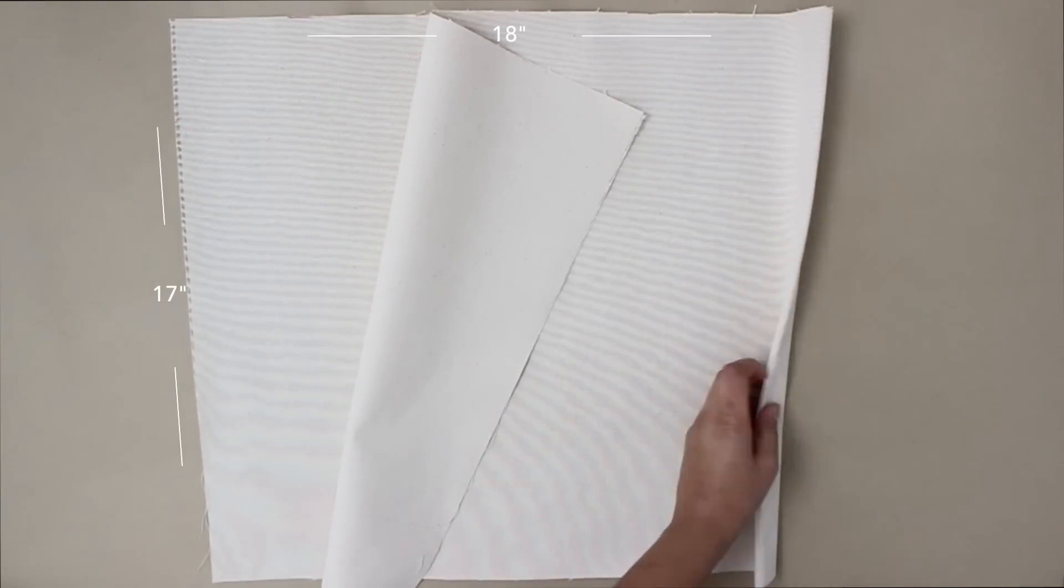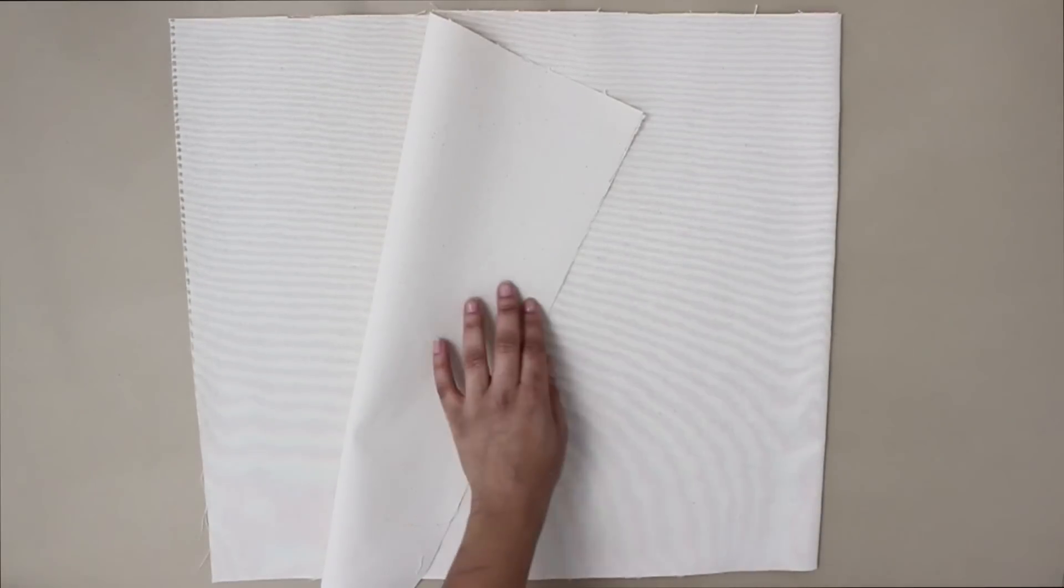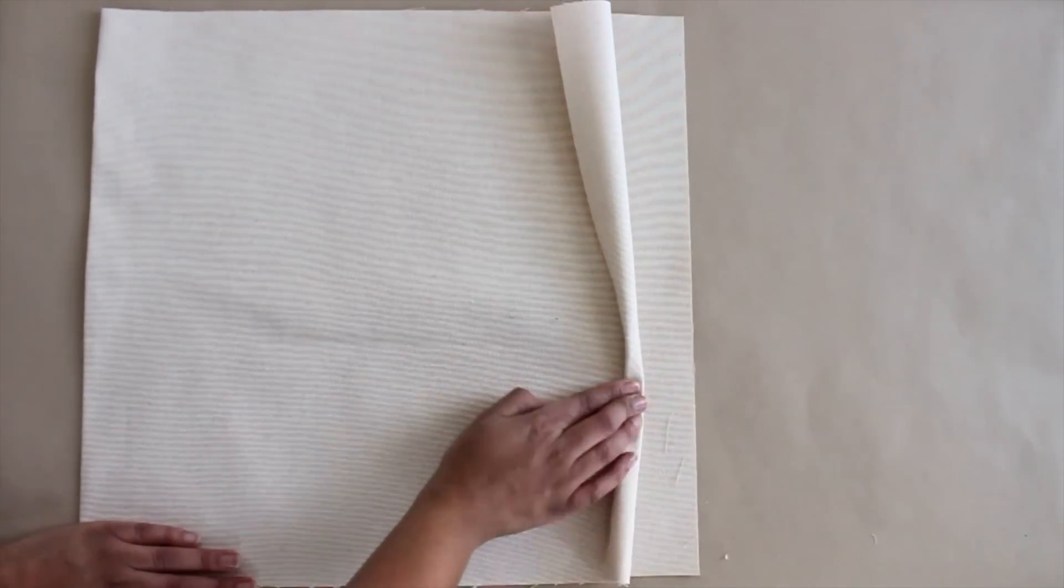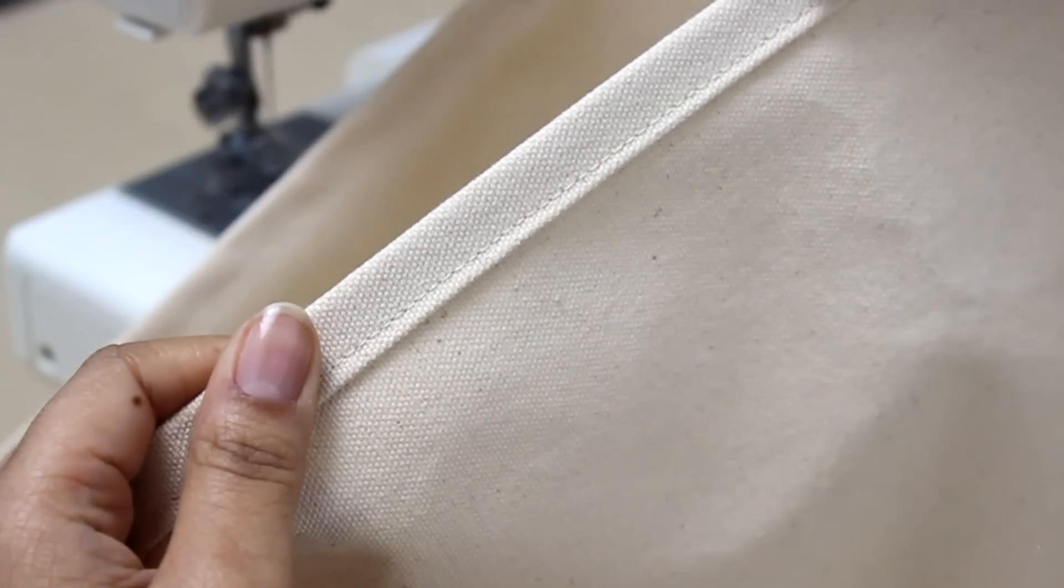I cut my pattern on the fold, so now we have a front, a back, and two open side seams. Now is usually the time that you would sew up those side seams, but since I'm doing something a little different with my straps, I'm gonna finish the top of my bag first. So I folded it down half an inch twice and I put in a top stitch through my sewing machine.